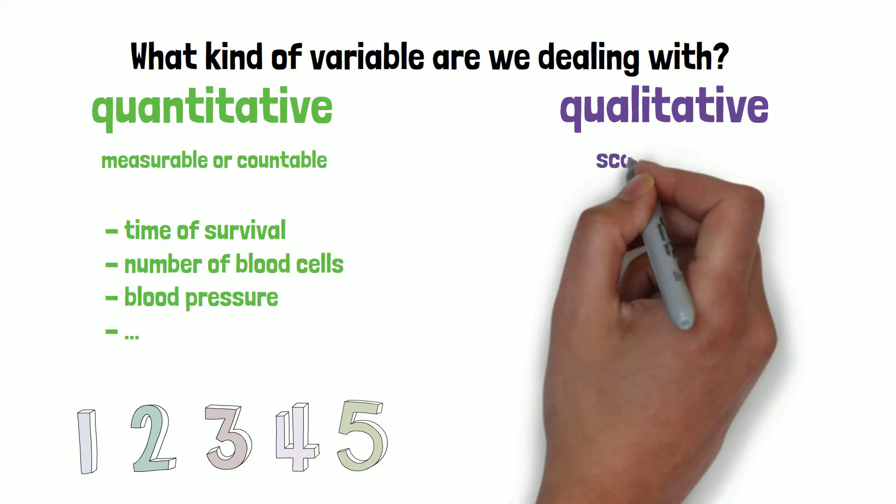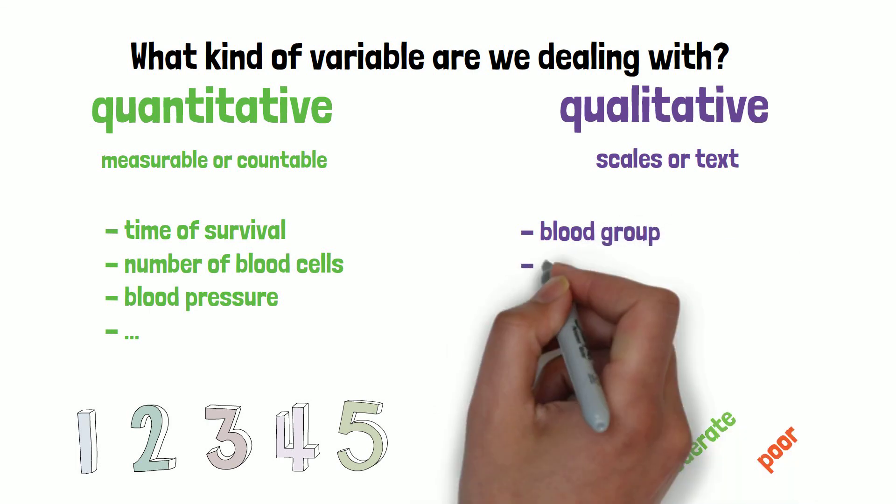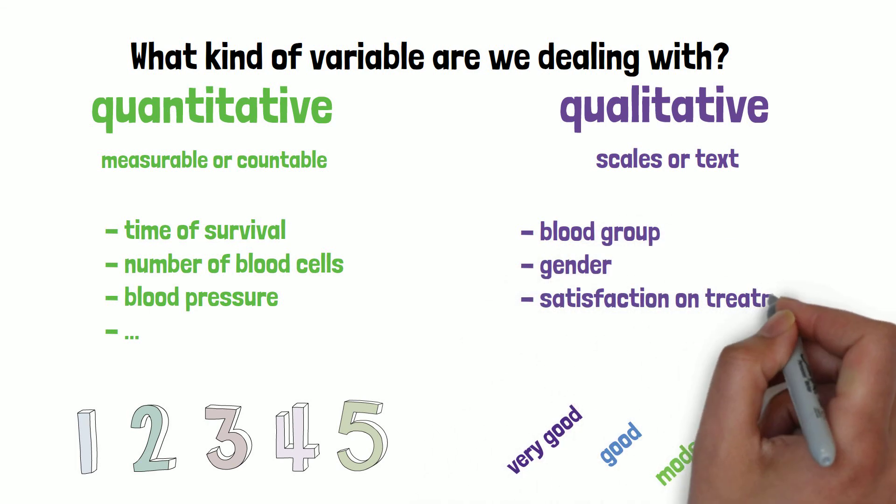Qualitative variables in contrast are not measurable and presented as scales or text, such as the blood group, gender, satisfaction of a patient on their treatment, status of a disease or status of survival.